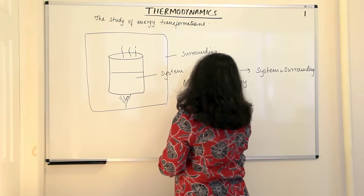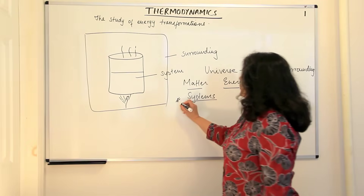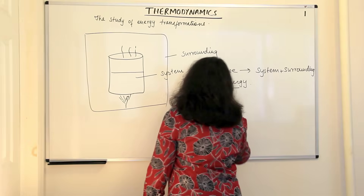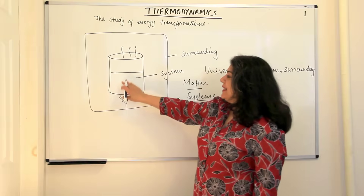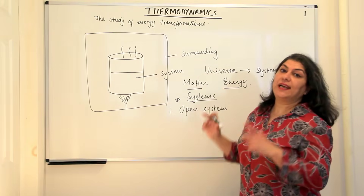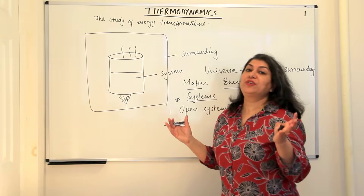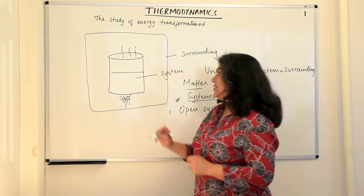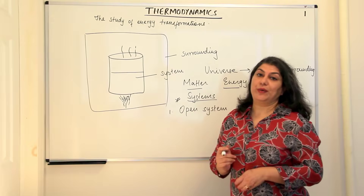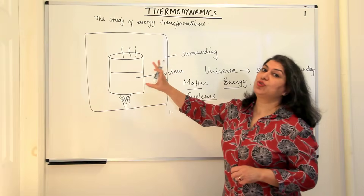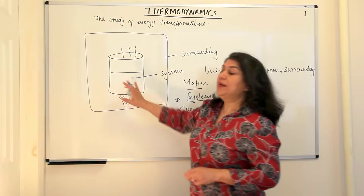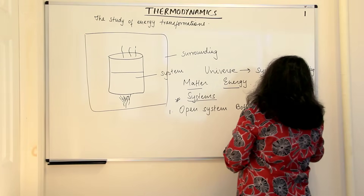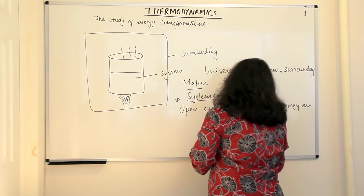Systems are classified into three types. The first type is an open system. An open system — imagine this beaker with water — allows exchange of both matter and energy. You can provide heat to it or cool it down, and water vapor can also escape. So exchange of both energy and matter takes place in an open system.